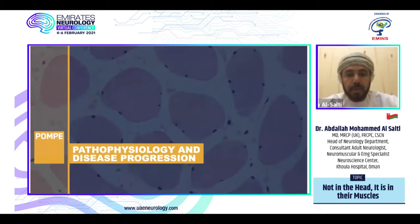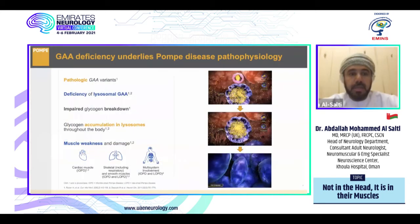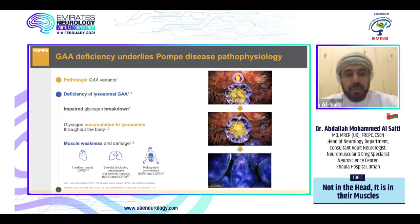The pathophysiology of the disease: pathogenic GAA variants lead to the deficiency of lysosomal GAA, which ultimately impairs glycogen breakdown. Glycogen accumulates in the lysosomes throughout the body, ultimately leading to muscle weakness and damage. This affects cardiac muscles, skeletal muscles, including respiratory and smooth muscles, making it ultimately a multi-systemic involvement.